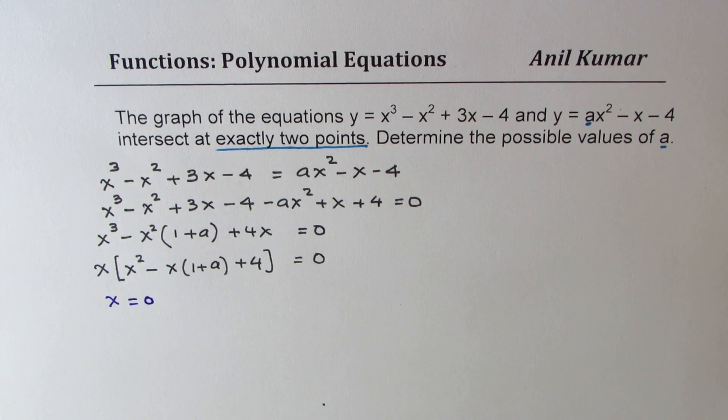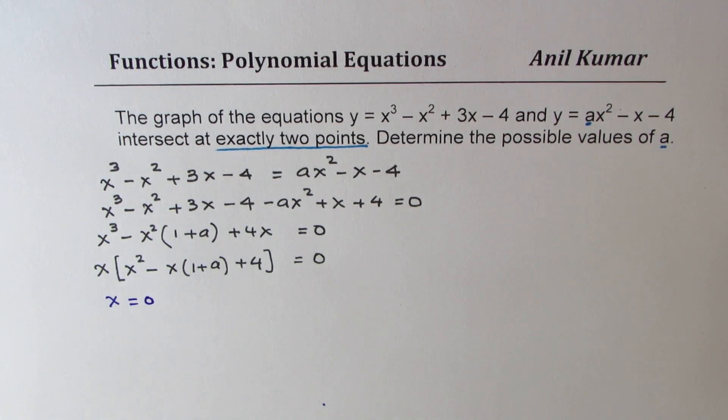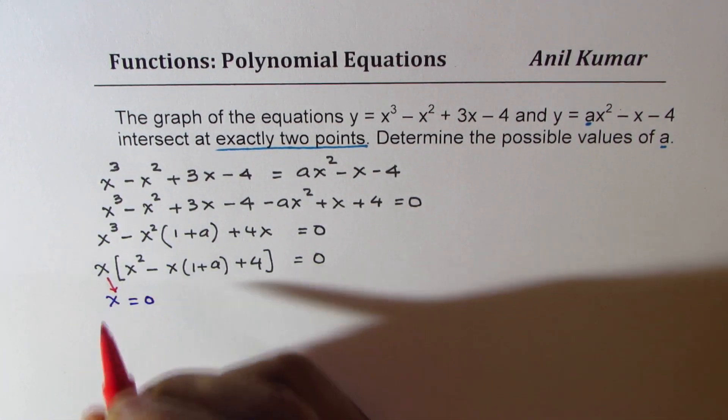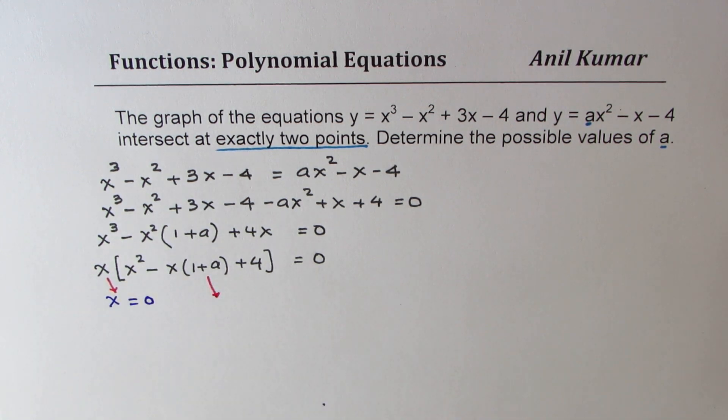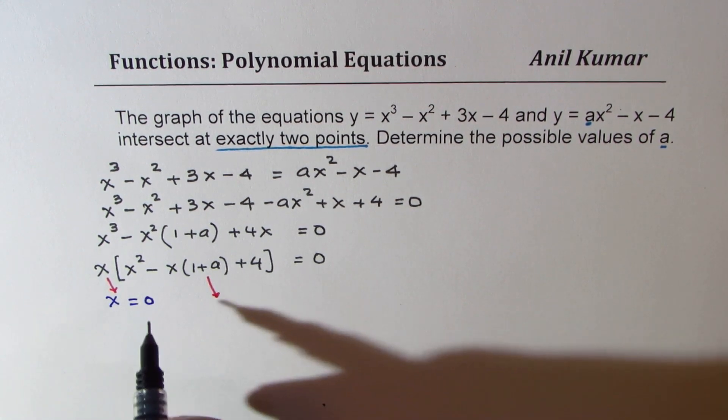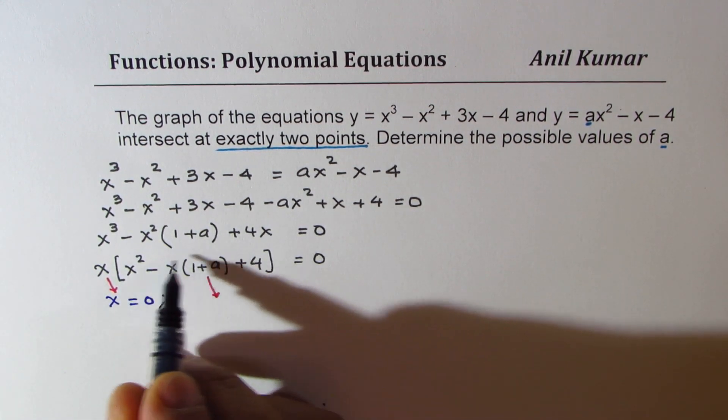So clearly we have one solution here which is x equals 0. So that gives you one solution. But we need exactly two, so the second one should come from here.